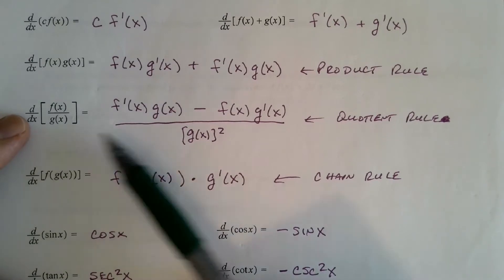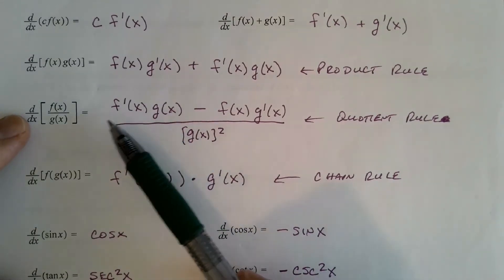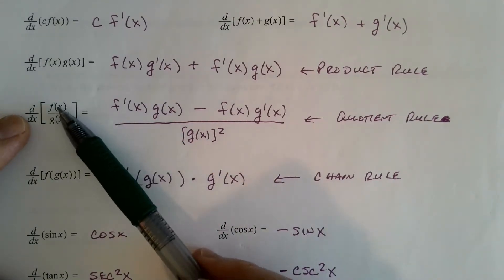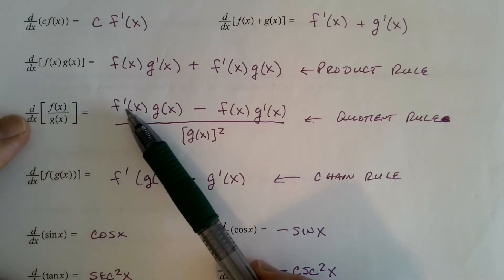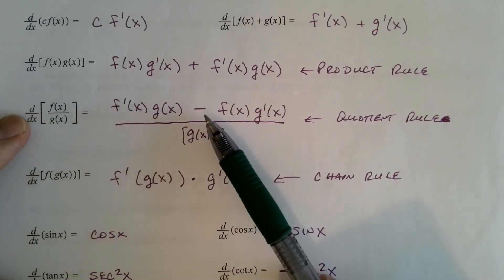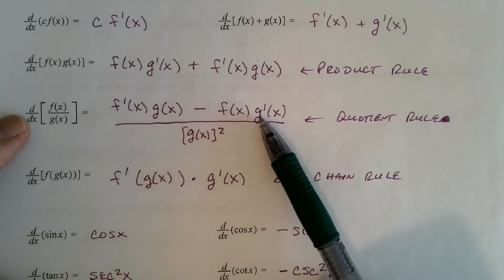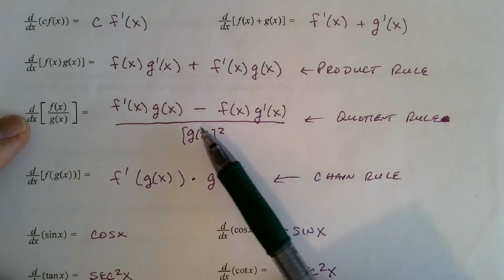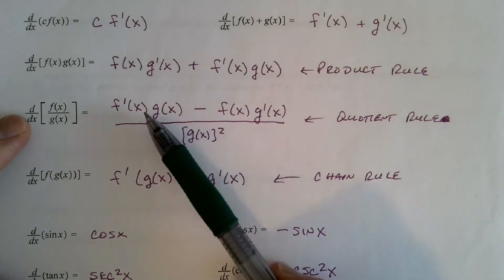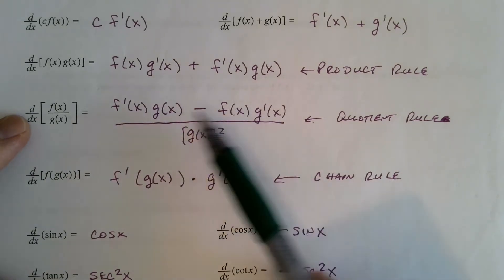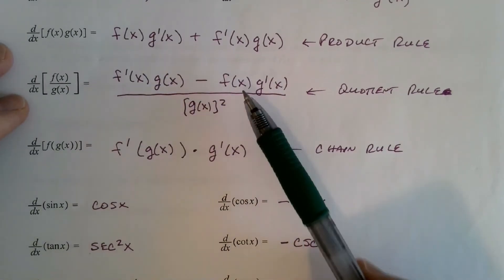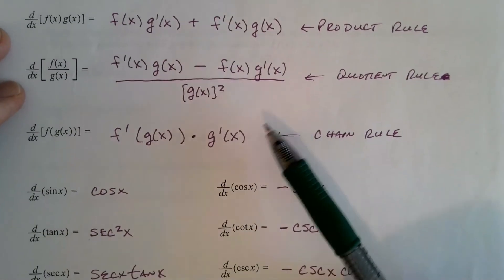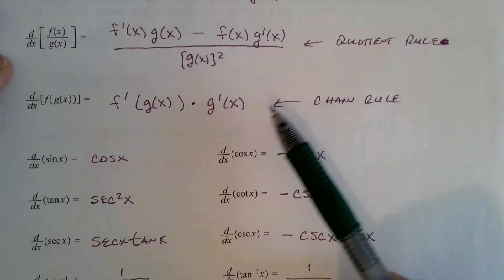Quotient rule — it's a little more complicated. You've got the numerator or top function f, the denominator or bottom function g. It's the derivative of the top times the bottom, minus the top times the derivative of the bottom, all over the bottom function squared. The order you subtract here is important — if you change the order, you're going to get negative one times the actual derivative.